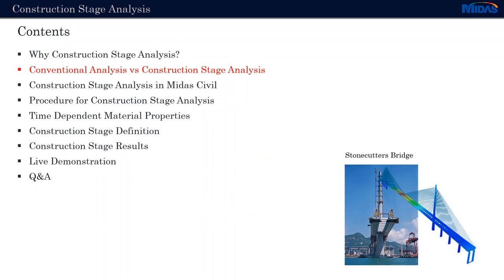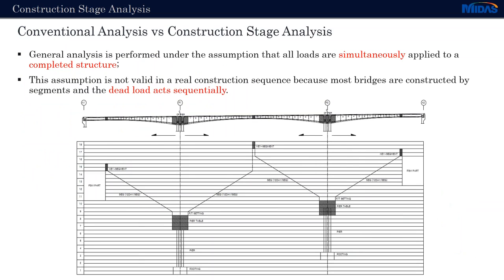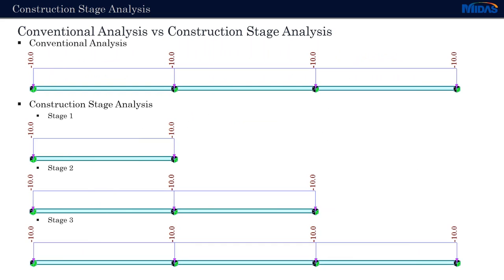Now let's look into some differences between a conventional analysis and the construction stage analysis. A conventional analysis is run under the assumption that all the loads are simultaneously added to a completed structure, whereas in reality a construction process is sequential and loads are added to the structure as segments are being constructed. In a conventional FEA, all elements are active from the beginning and all loads are active as well.